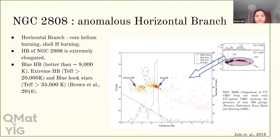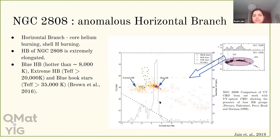This was the motivation of my first project, in which I studied the hot stellar population of globular clusters. We specifically targeted the horizontal branch using ultraviolet data, since hot stars are brighter in ultraviolet, ensuring we avoid contamination from cooler stars. NGC 2808 is a Milky Way globular cluster known to have an anomalously extended horizontal branch. Our study found distinct clustering of different groups — blue horizontal branch stars, extreme horizontal branch stars, and blue straggler stars — forming different groups in UV color magnitude diagrams.